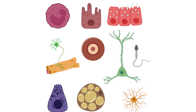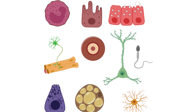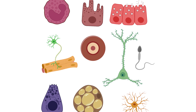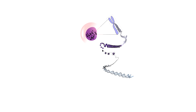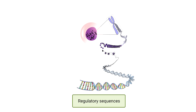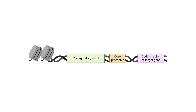Despite the remarkable diversity in cell types, the DNA in all our cells is genetically equivalent. DNA is packaged tightly in the nucleus as chromatin, where strands of DNA are wrapped around histones. The correct expression of mRNAs in particular developmental cell types requires coordinated gene expression. The sequences that direct whether a gene will be on or off are called regulatory DNA sequences. Genomic regulatory sequences, such as enhancers and promoters, contain short DNA sequences that are called cis-regulatory motifs.